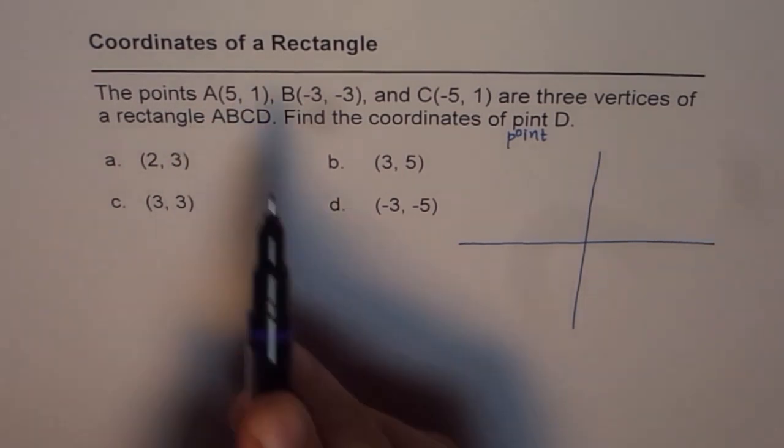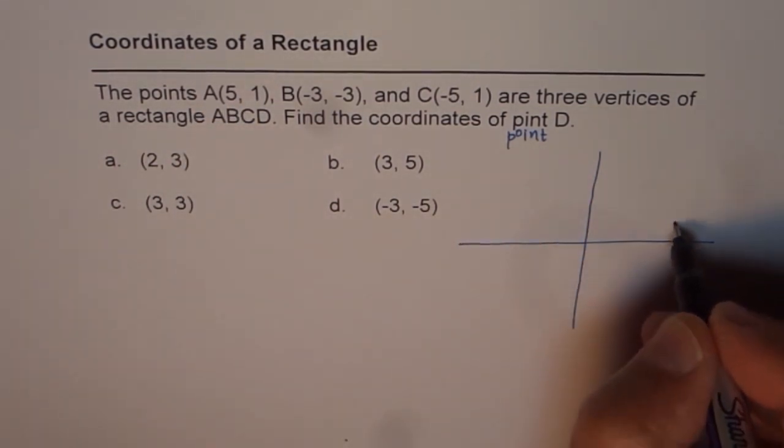We say A is 5,1, so let's say this is somewhere here, 5,1, and this is my point A.